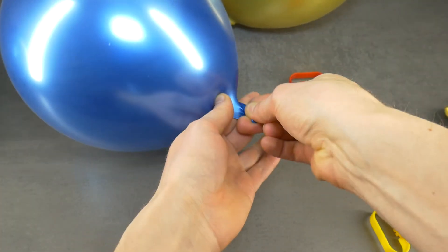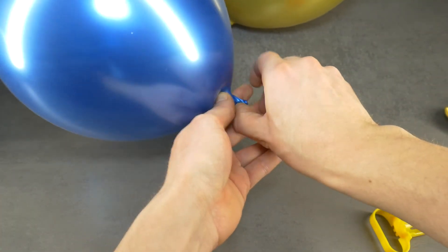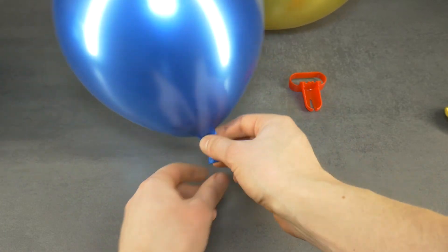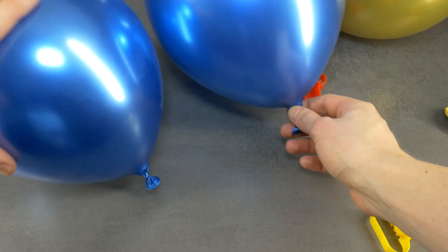The good old way of using only your fingers is as fast or even faster. If you need to tie dozens of balloons, then maybe a balloon knotter can save the skin on your fingers from rubbing.